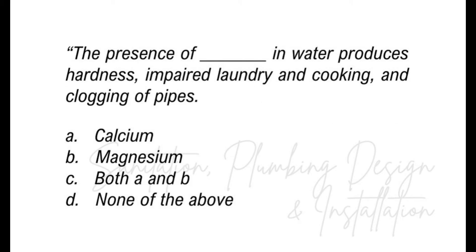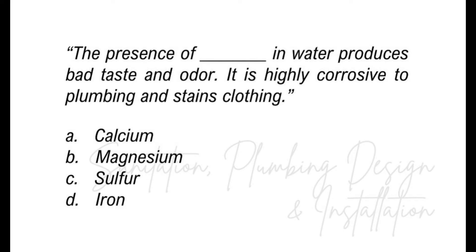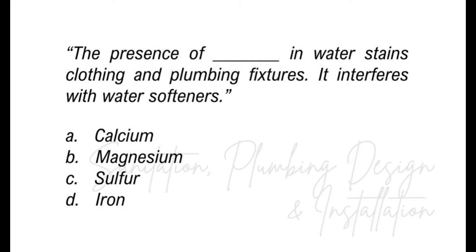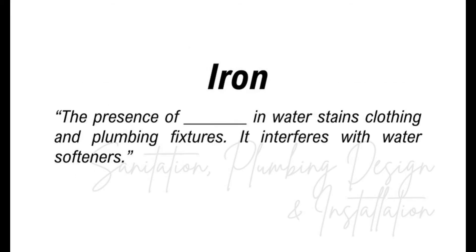The presence of this in water produces hardness, impaired laundry and cooking, and clogging of pipes — A, calcium; B, magnesium; C, both A and B; D, none of the above? The answer is both calcium and magnesium. The presence of this in water produces bad taste and odor and is highly corrosive to plumbing and stains clothing — A, calcium; B, magnesium; C, sulfur; D, iron? The answer is sulfur. The presence of this in water stains clothing and plumbing fixtures and interferes with water softeners — A, calcium; B, magnesium; C, sulfur; D, iron? The answer is iron.